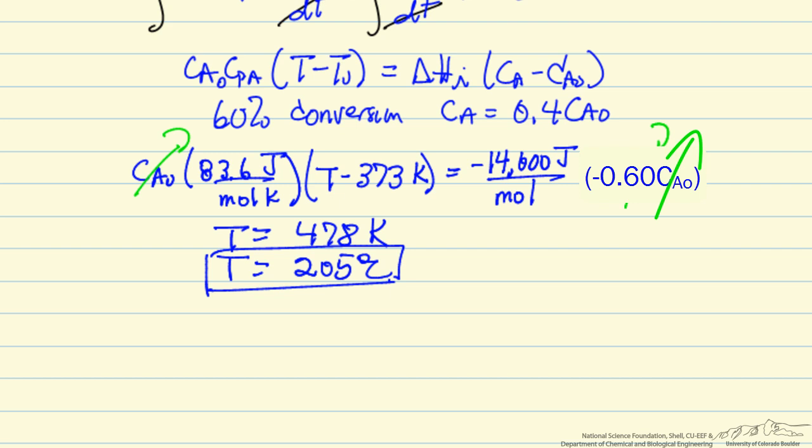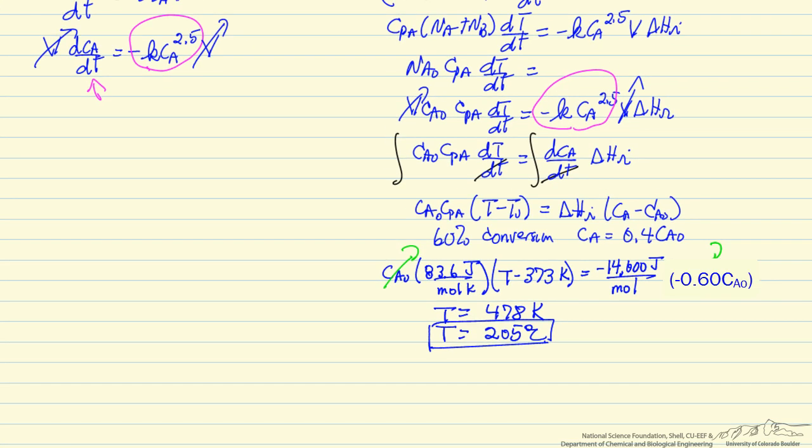So the adiabatic temperature of course is independent of the type of reactor that we're looking at. If we want to get the time, however, we're now going to have to go back and solve these differential equations simultaneously, and the best way to do that is to solve them numerically. It's an initial value problem. At time equals 0, we know the concentration, we know the temperature.